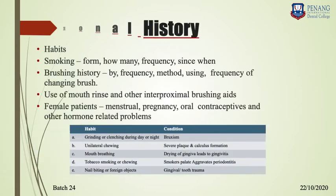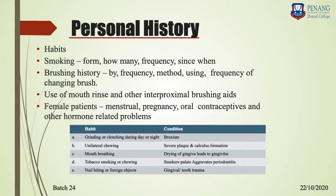Next is personal history. You have to identify the patient's habits. There are different types — some habits are deleterious to the oral cavity, such as grinding or clenching, mouth breathing, tobacco smoking, and nail biting. These harmful habits can affect the gingiva. If the patient doesn't have any habits, write 'no relevant history.'